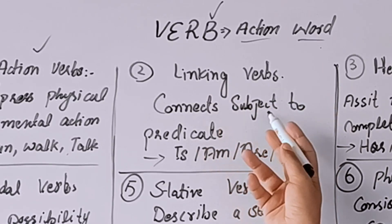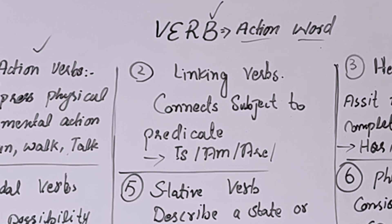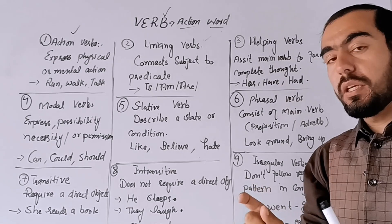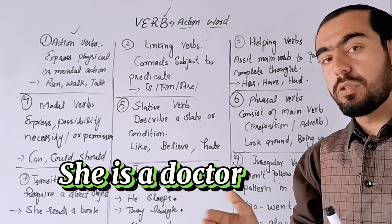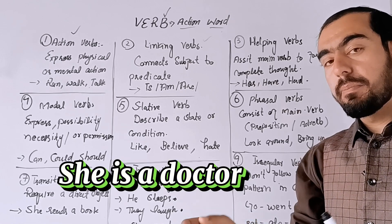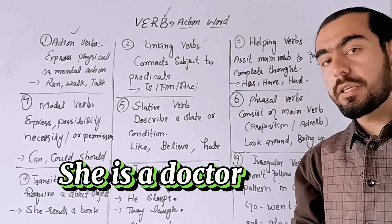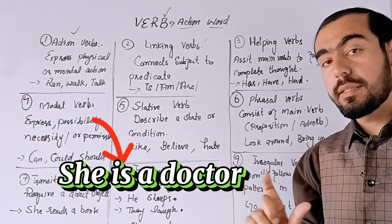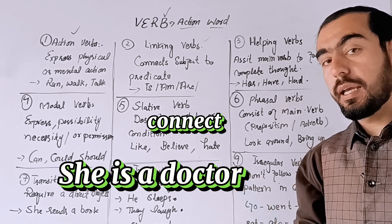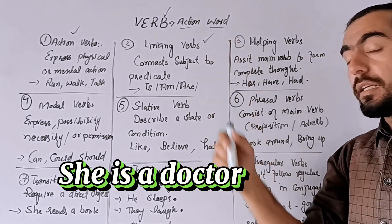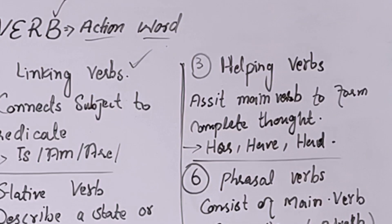Linking verbs are the verbs that connect the subject to its predicate — جو کسی sentence میں subject کو predicate کے ساتھ link کرتا ہے اس لئے اسے linking verb کہتے ہیں۔ Is, am, are, was, were — normally they are considered to be linking verbs۔ مثال کے طور پر 'she is a doctor' میں 'is' نے connector کا کام کیا ہے جس نے 'she' کو باقی sentence کے ساتھ connect کیا، اسی لئے اسے linking verb کہا جاتا ہے۔